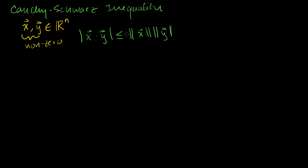We also learned that the only time this inequality turns into an equality is the situation where x is equal to some scalar multiple of y. In some textbooks they say this has to be a nonzero scalar multiple, but that's a bit obvious — I told you that x and y are nonzero, so if c were 0, then x would be 0, which contradicts our assumption. So c is going to be nonzero.